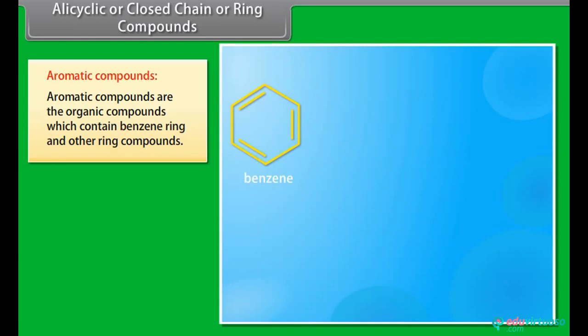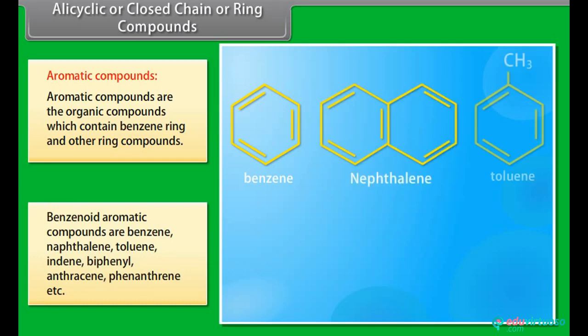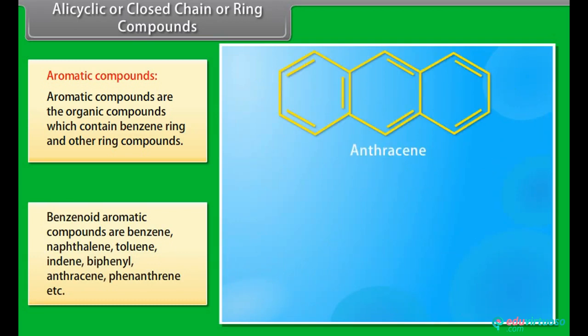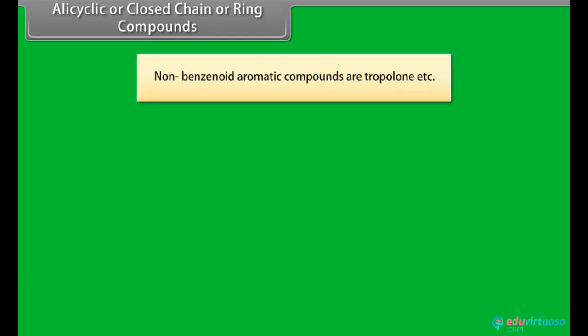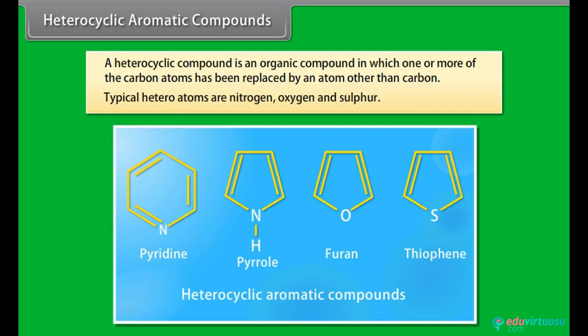Aromatic compounds are organic compounds which contain a benzene ring and other ring compounds. Benzenoid aromatic compounds include benzene, naphthalene, toluene, indene, biphenyl, anthracene, phenanthrene, etc. Non-benzenoid aromatic compounds include tropylone, etc. Heterocyclic aromatic compounds: a heterocyclic compound is an organic compound in which one or more of the carbon atoms have been replaced by an atom other than carbon. Typical heteroatoms are nitrogen, oxygen, and sulfur.